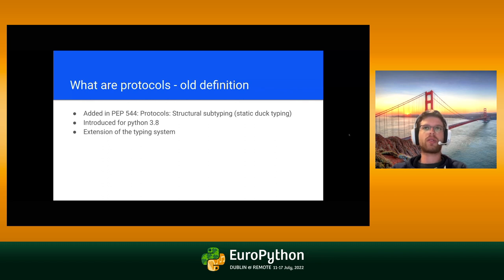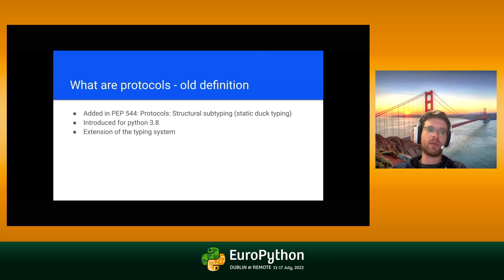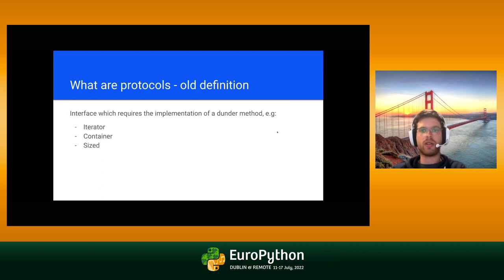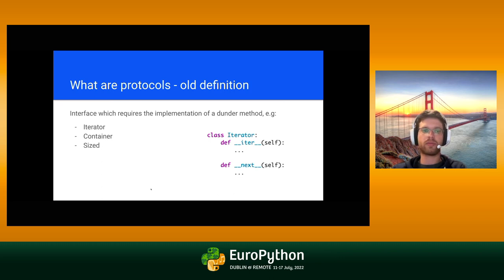So what are protocols? Let's first talk about the existing definition. They're added in PEP 544, aptly named 'Protocol Structural Subtyping.' They're introduced for Python 3.8 and they are an extension of the typing system. The term protocol is a widely understood construct in the Python community, which basically means an interface which requires the implementation of a Dunder method. So the iterator protocol implies the implementation of the __iter__ and __next__ Dunder methods. The size protocol, for example, requires the implementation of the __len__ method.